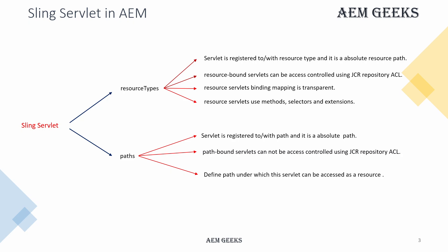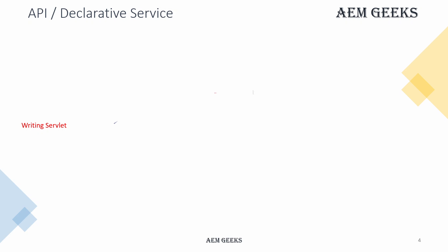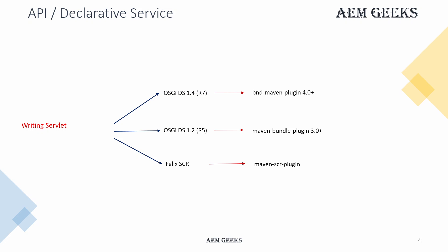There are a few basic concepts to understand before writing a servlet. There are three kinds of ways to write servlets today. First, OSGI DS 1.4 or declarative services 1.4, also called R7 — for this you need BND-Maven plugin version 4.0 or plus. If you're using archetype 20 or higher, you will already have this. Second, OSGI DS 1.2 — for that you need maven-bundle-plugin 3.0 or higher. Check these in your project's parent POM. The third is the generic SCR annotation, which is completely outdated and not used anymore. We'll discuss only the first two.